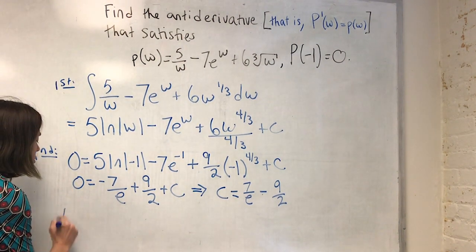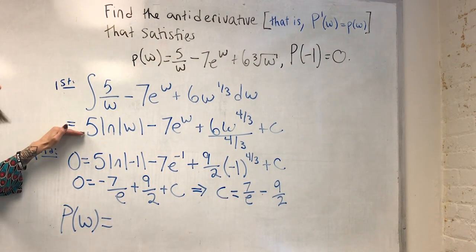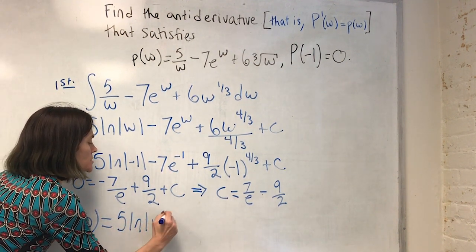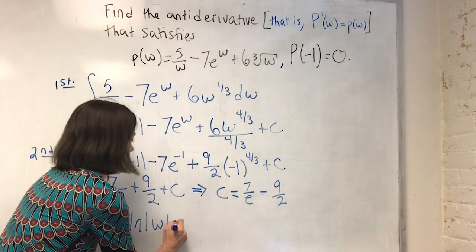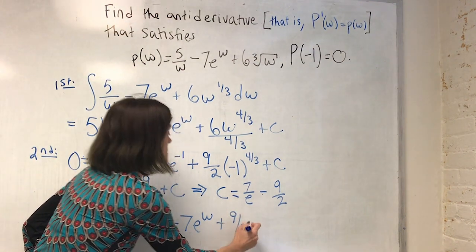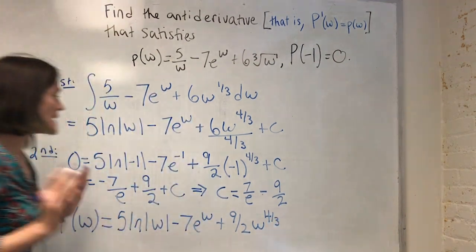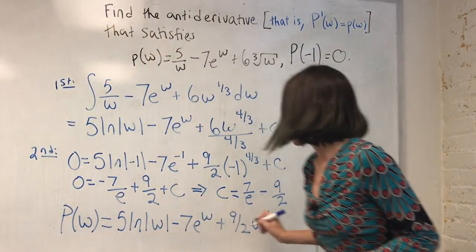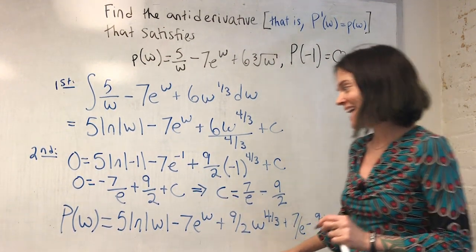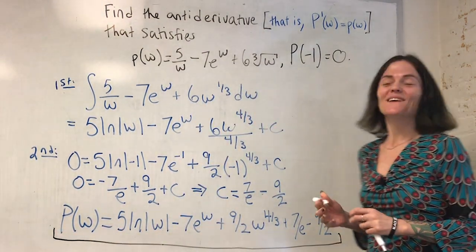So capital P of w equals, I look here, except I fill in the appropriate value of c. Five ln absolute value of w, minus seven e to the w. This is going to be a plus nine halves, w to the four thirds. Now here comes my c. It's plus seven over e minus nine over two. It's a lot of terms. This is our final answer.